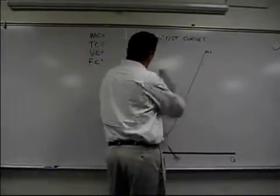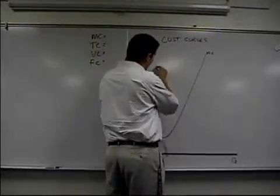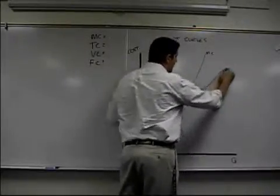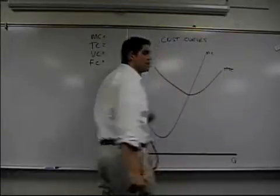When marginal is below the average, it pulls the average down. So this is average total cost. And when marginal is above the average, it pulls the average back up again. So this is average total cost. It looks just like that.